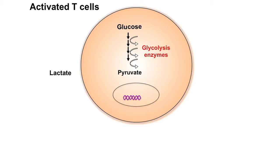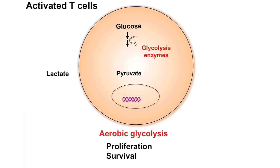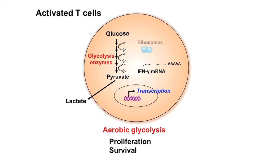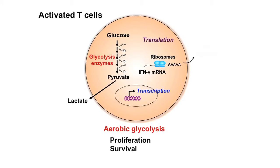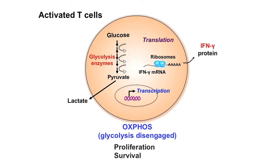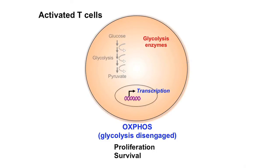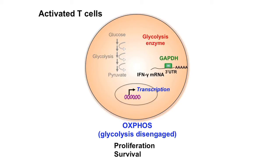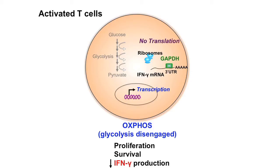Activated T cells engage aerobic glycolysis, where glucose is metabolized by a series of glycolysis enzymes to pyruvate in the cytoplasm. When T cells are unable to engage glycolysis and are forced to engage oxidative phosphorylation, glycolysis enzymes are no longer active in the pathway. One of these enzymes, GAPDH, has been shown to act as an RNA binding protein, where it can bind to the 3' UTR of interferon gamma messenger RNA. This binding prevents the translation of this cytokine, leading to decreased interferon gamma production in T cells engaging oxidative phosphorylation.